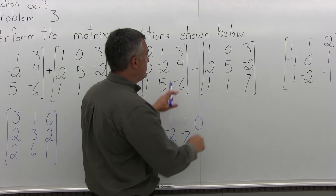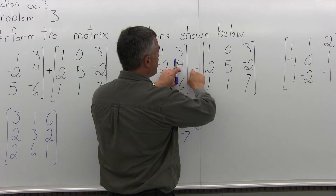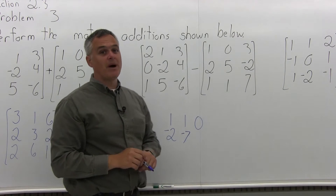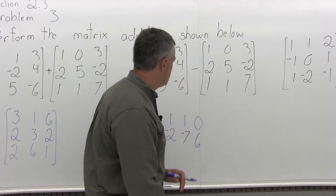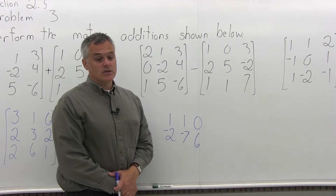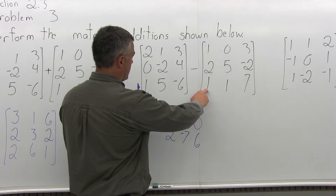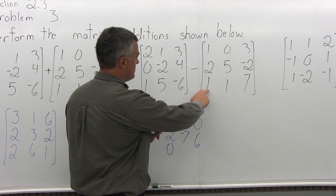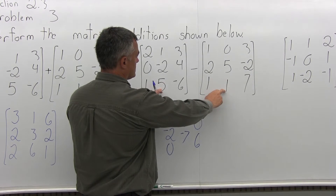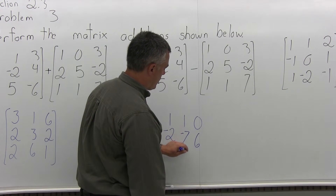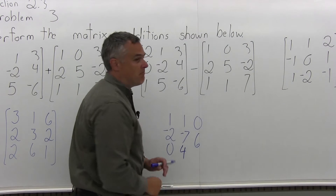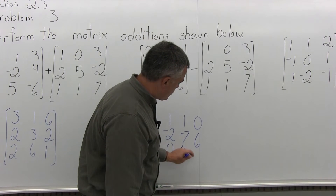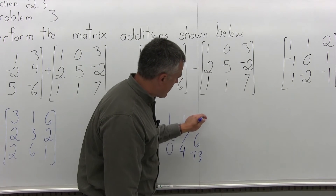And then middle right minus middle right, 4 minus a negative 2 — pay attention to your signs — 4 minus a negative 2 is really 4 plus 2, so the answer is 6. And then the bottom rows: bottom left minus bottom left will be 1 minus 1, which is 0. And then bottom center minus bottom center, 5 minus 1, which is 4. And then bottom right minus bottom right, negative 6 minus 7, which would be negative 13. And then I'll put the brackets on that.